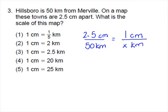If you don't remember how to solve proportions, you cross multiply, or multiply the diagonal across the equal sign. 50 kilometers times one centimeter is still 50 kilometers.